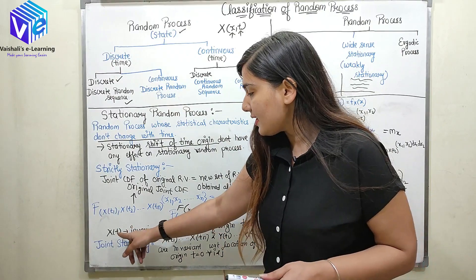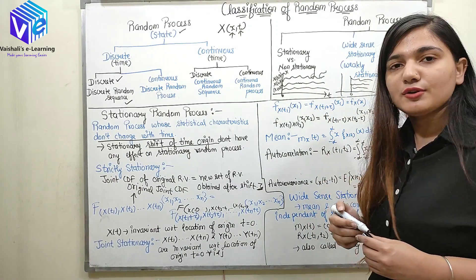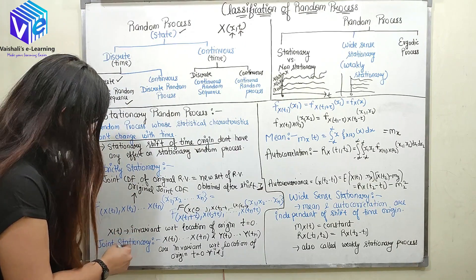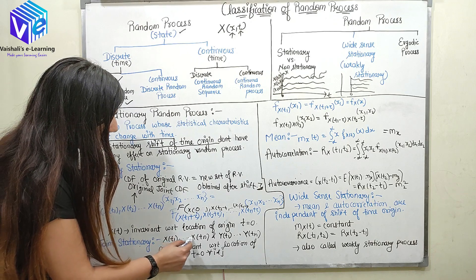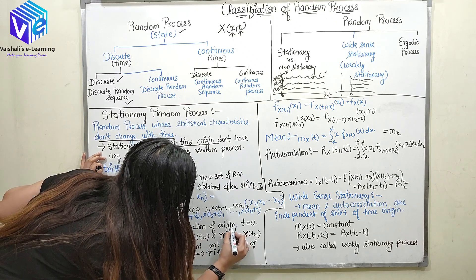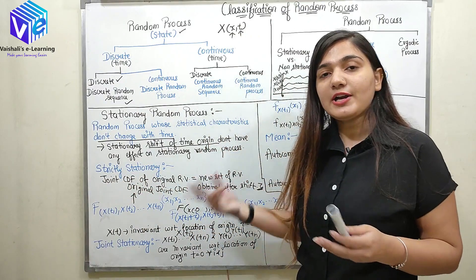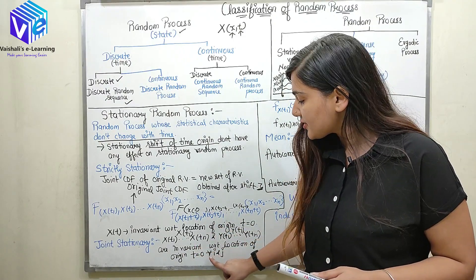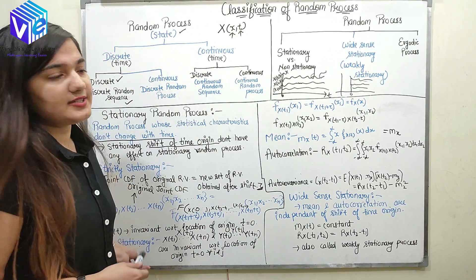From this we can say x(t) is invariant with respect to the location of the time origin — shifting the origin has no effect on x(t). A process is called jointly stationary when two random processes x(ti) and y(tj) are both invariant with respect to shifting of the origin — that is, when both are stationary individually.